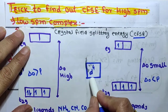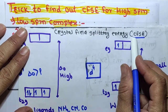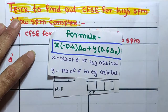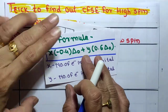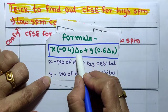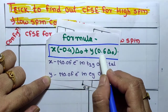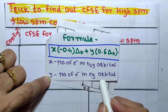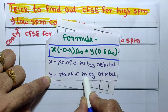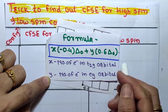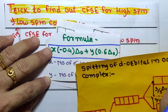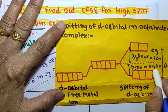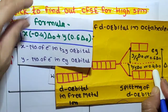Given a configuration, we find the crystal field stabilization energy using the formula: x × (−0.4 ΔO) + y × (0.6 ΔO), where x is the number of electrons in t2g orbitals and y is the number of electrons in eg orbitals. The t2g level stabilizes by 0.4 ΔO and the eg level increases by 0.6 ΔO.